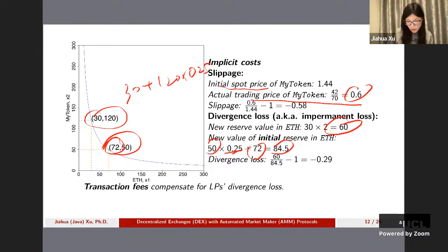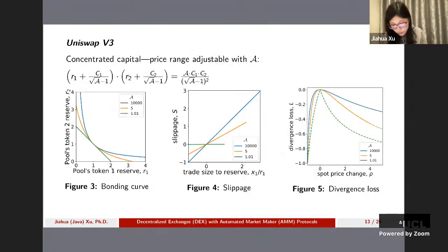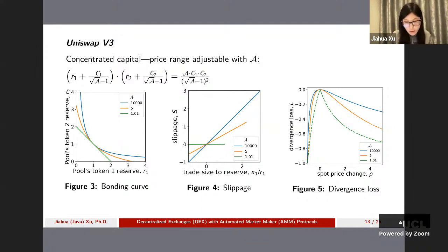The way to compensate for divergence loss is through transaction fees — instead of allowing traders to transact for free, we apply fees so liquidity providers are compensated. The most basic protocol we introduced is the Uniswap constant product conservation function. With Uniswap V3, they introduced a new feature called concentrated liquidity.